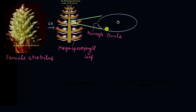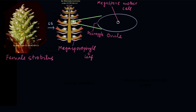Inside the ovule a lot of interesting things are going on. There are a lot of cells inside the ovule, but there is one special cell which is the megaspore mother cell. As the name suggests, it is responsible for making spores. This megaspore mother cell divides by meiosis and gives rise to four spores.